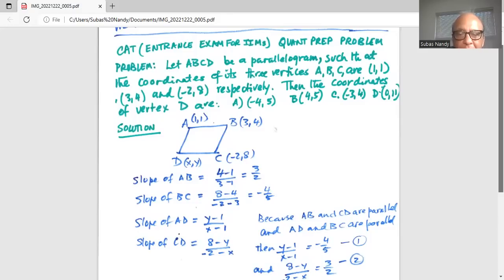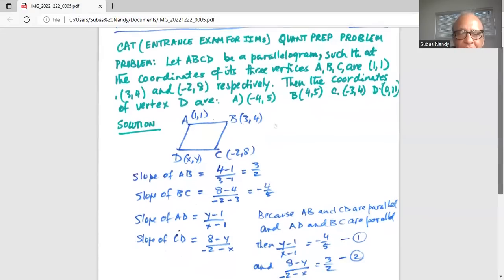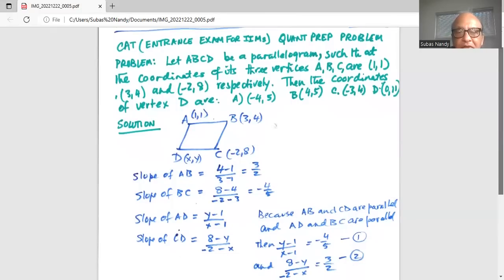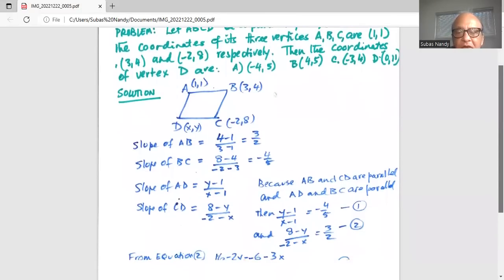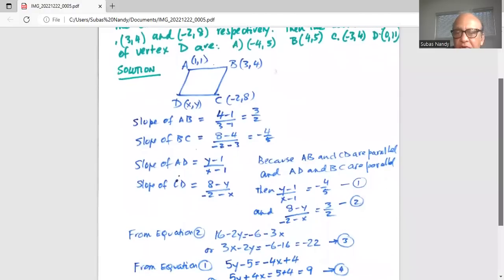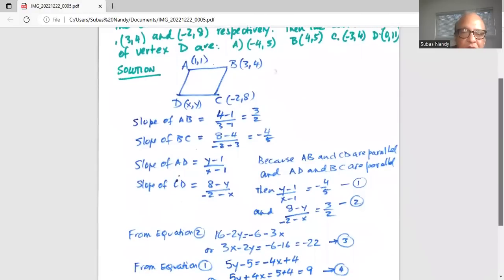Thus, we have (y-1) divided by (x-1) is equal to -4 over 5. And similarly, the slope of CD, which is (8-y) divided by (-2-x) should be equal to 3 over 2.